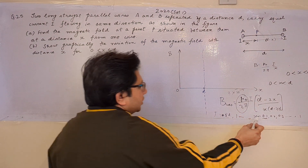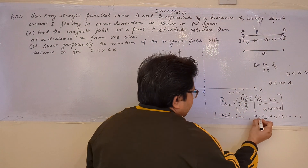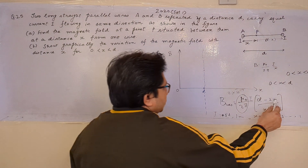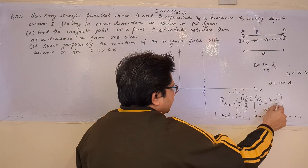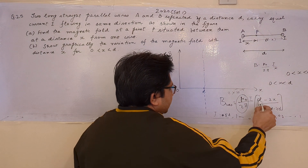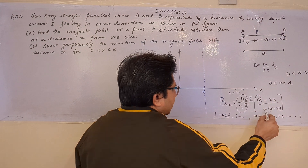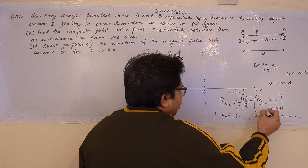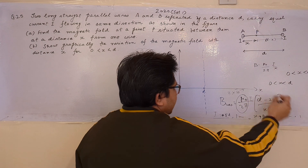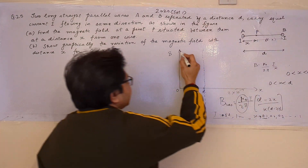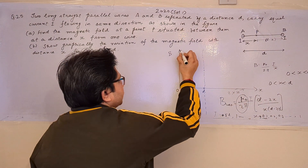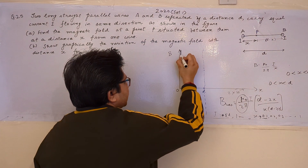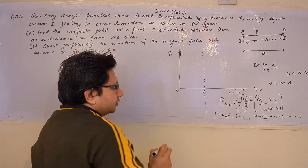When we put x = 0, the denominator x(d−x) becomes 0, so the whole expression becomes infinite. Therefore, at x = 0, B equals positive infinity. This is the starting point of the graph — the curve starts from positive infinity near wire A.